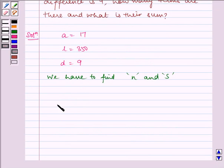Now, we know AN is equal to A plus N minus 1 times D, where AN is given to us as the last term which is 350.